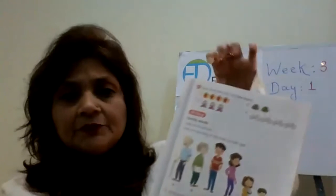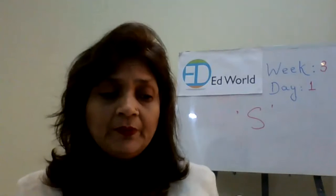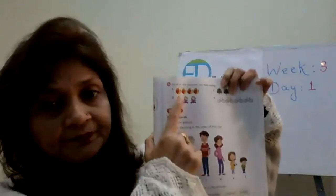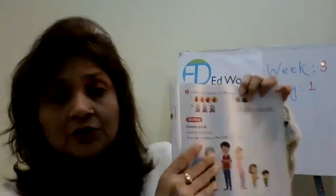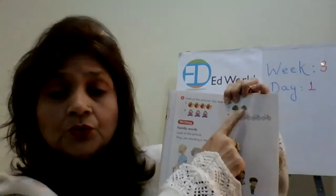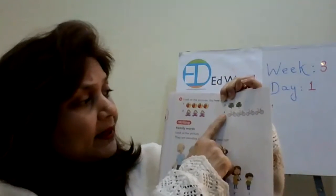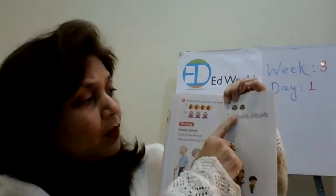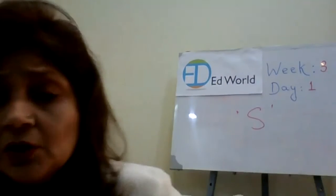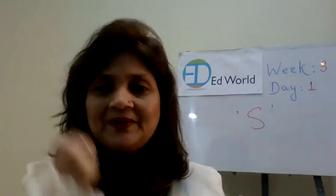Now, turn the page and come to this page. Here, what we have to do is look at the pictures and say how many. First picture is about balls — how many balls are here? One, two, three, four. So, we say balls. Number two is two trees. Number three is one, two, three dolls. And number four is bikes — one, two, three, four bicycles. Quickly, in one minute time, you start your work. One, two, and three. Start.